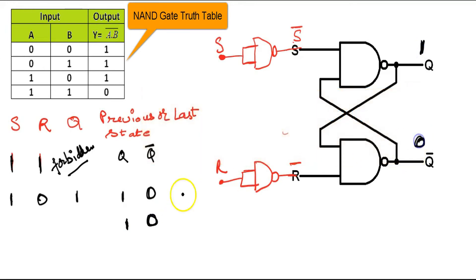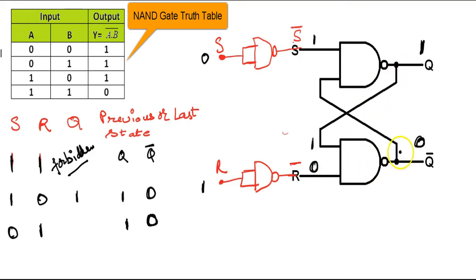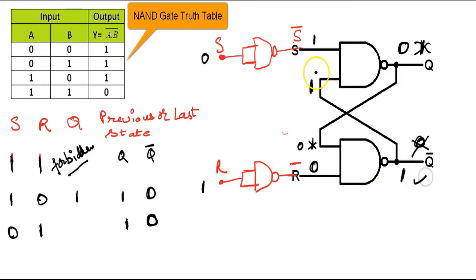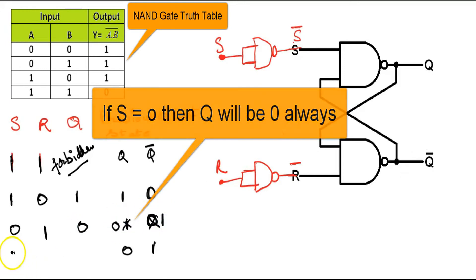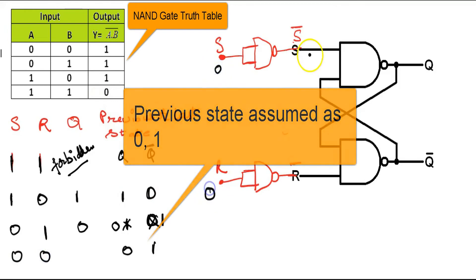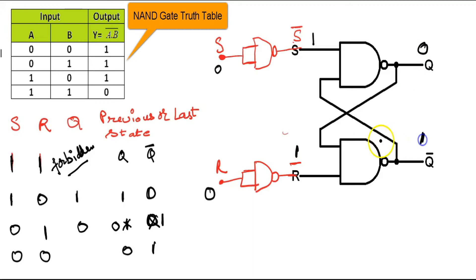Now let the previous state be Q = 1, Q complement = 0, and inputs S = 0, R = 1. The NAND gate becomes 1. Then 1,0 gives 1. Then 1,1 gives 0. Then 0 comes here, and 0,0 gives 1. The stable state is Q = 0, Q complement = 1. The same holds when the previous state is also 0,1.